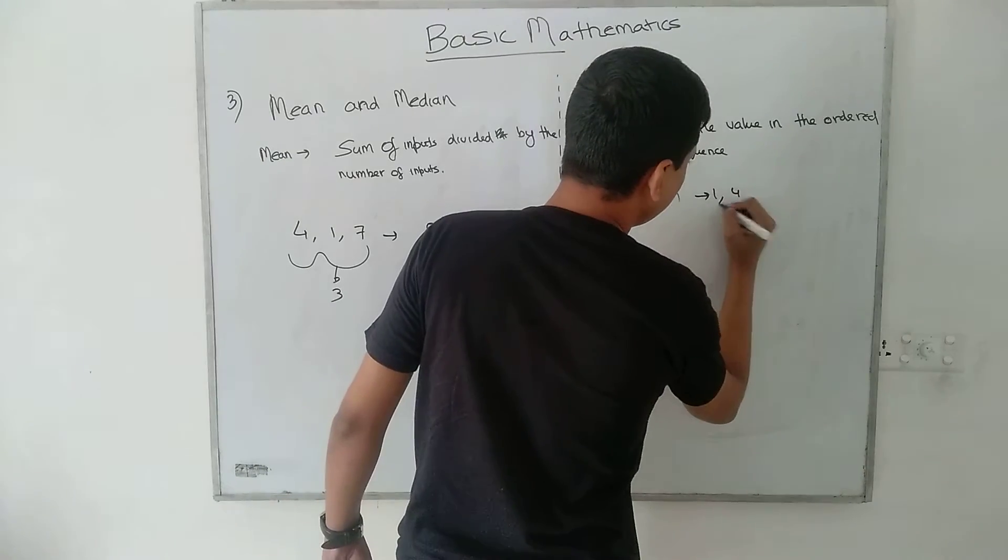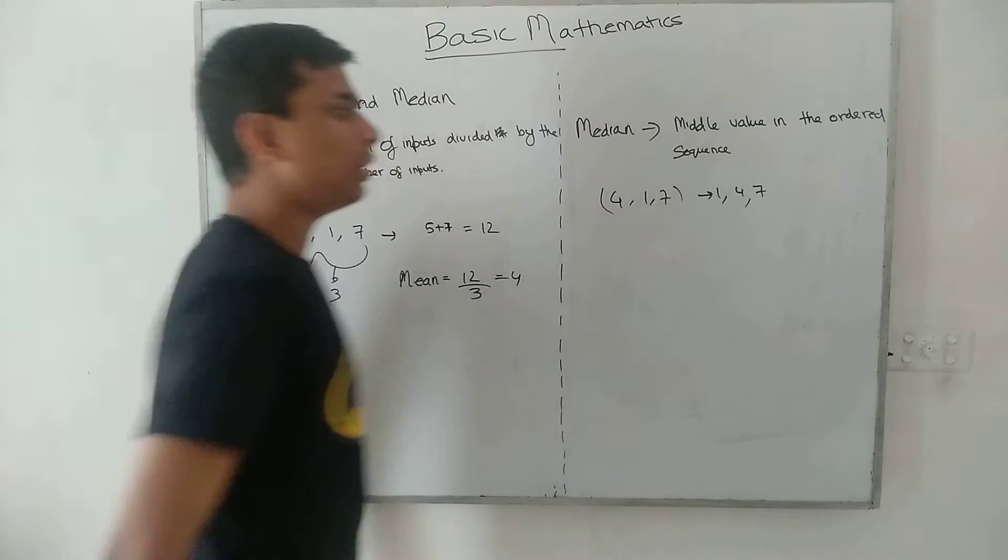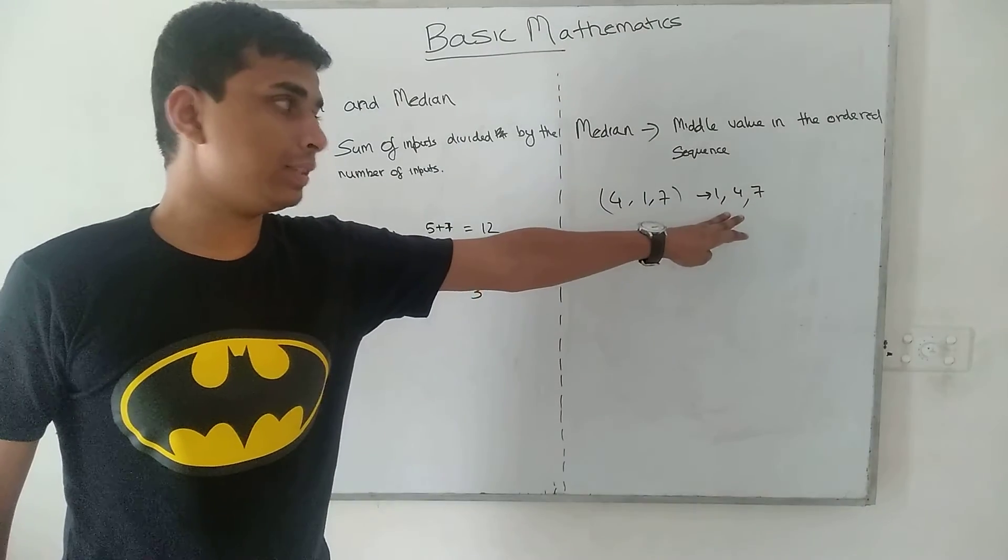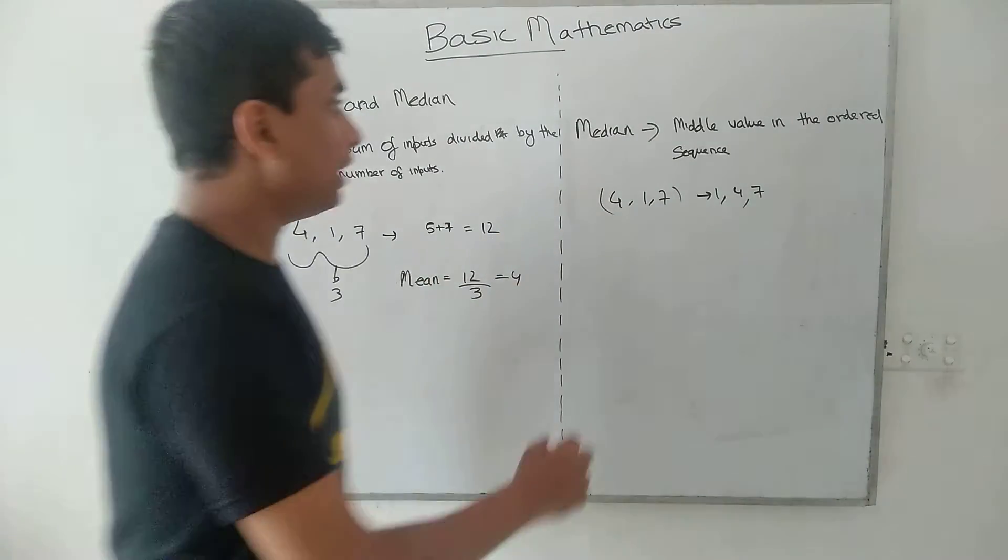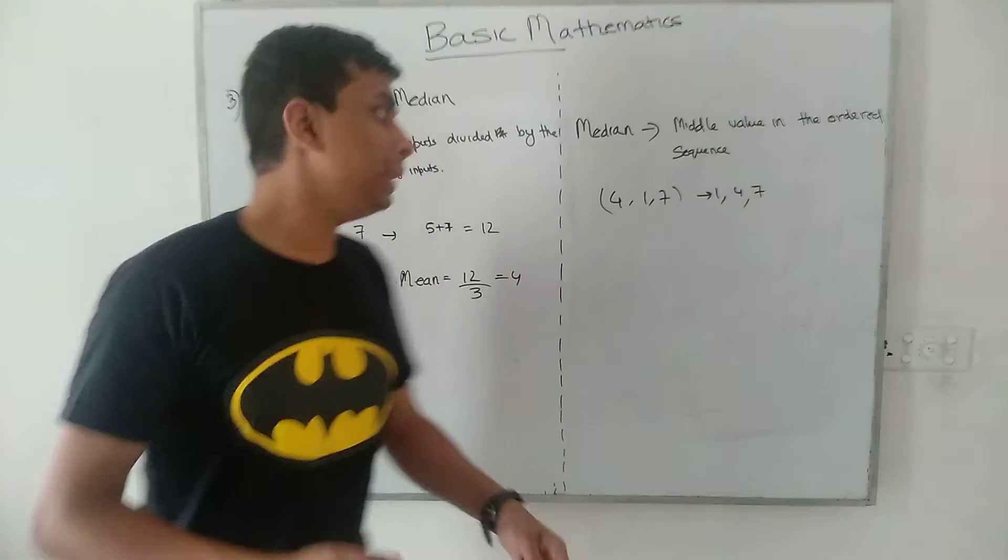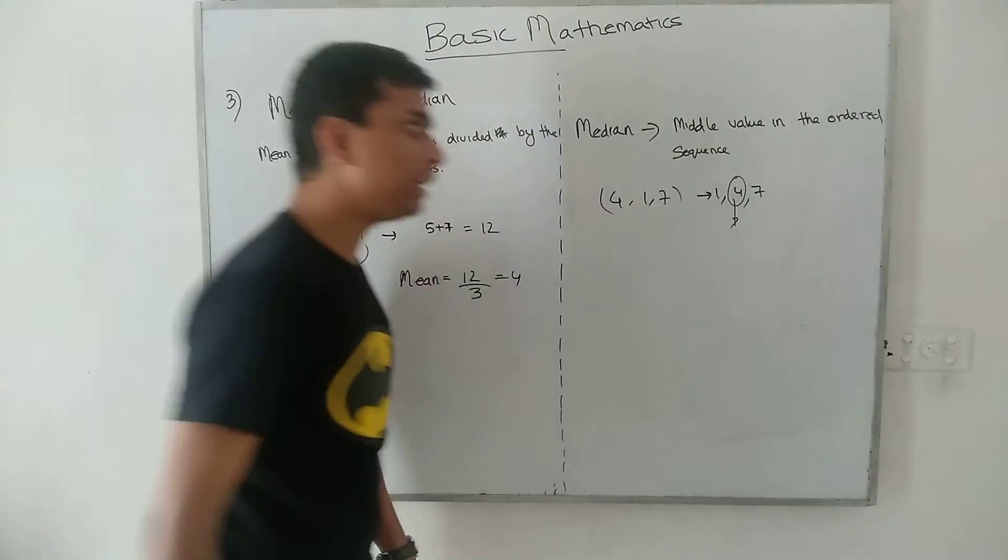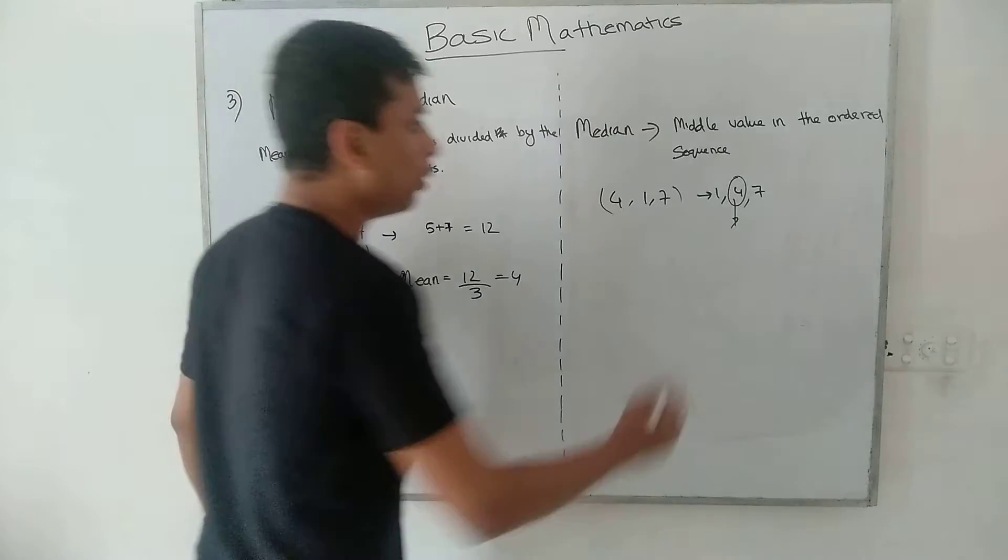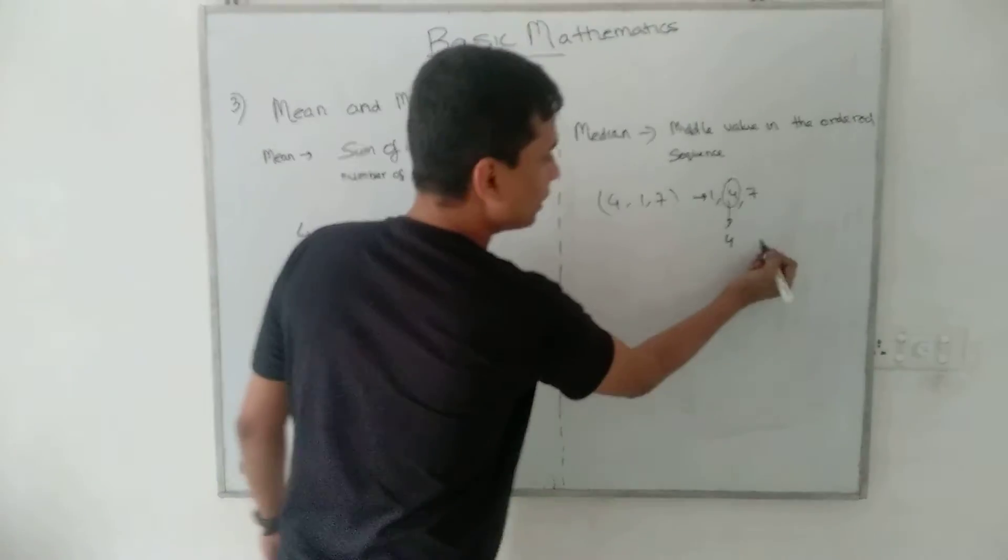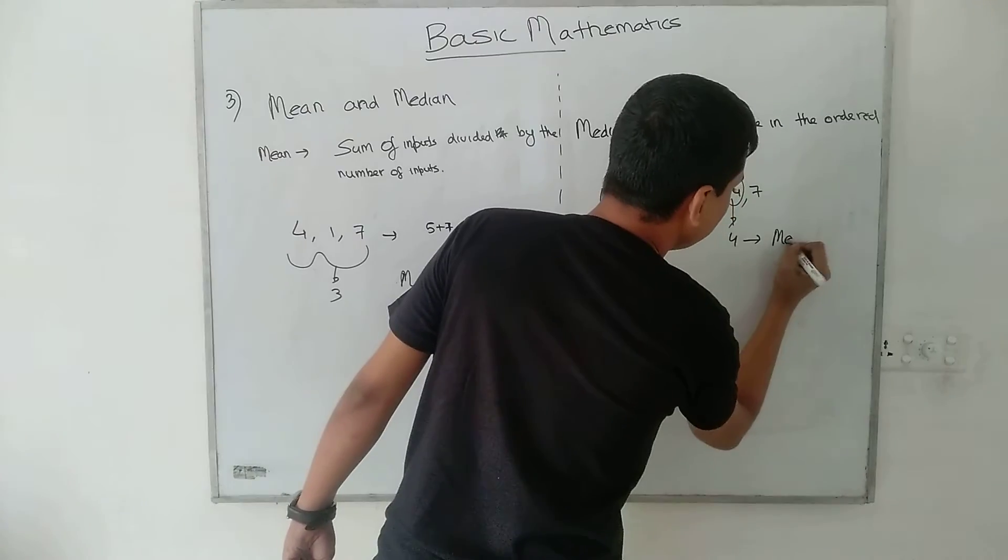On sorting it we would be getting 1, 4, and 7. So this is the sorted sequence. What does median mean? Median stands for the middle value. So in this particular case, 4 is our middle value and therefore 4 is the median.